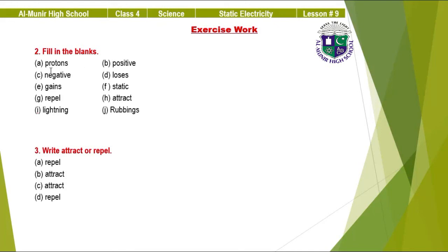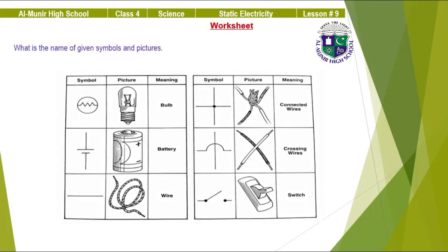Question two — fill in the blanks: A) protons, B) positive, C) negative, D) loses, E) gains, F) static, G) repel, H) attract, I) lightning, J) rubbing. Question three — write attract or repel: A) repel, B) attract, C) attract, D) repel. Next we have circuit symbols: bulb, battery, wire, connected wires, crossing wires. This is all for today. Thank you. Allah Hafiz.